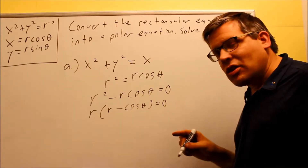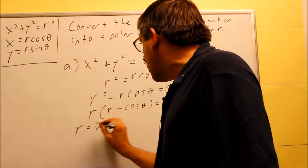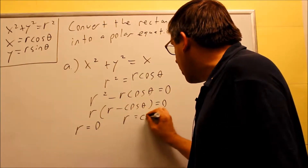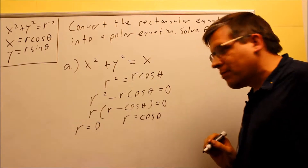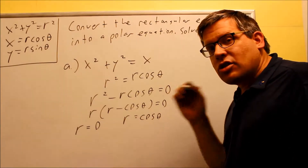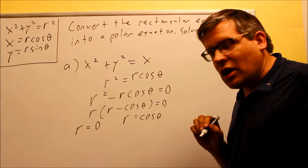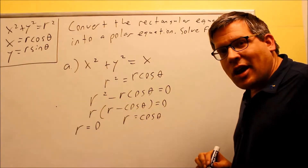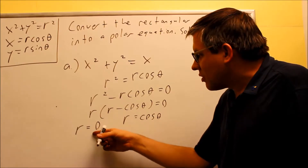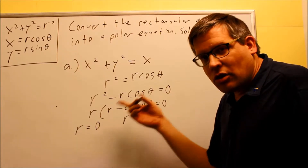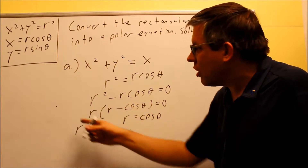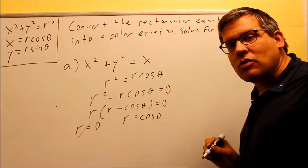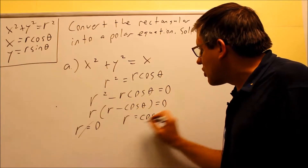Setting the first factor equal to zero gives r equals zero, and setting the second gives r equals cosine theta. However, we're going to ignore r equals zero. Even though it is technically an answer, r equals zero just represents a circle with radius zero — basically a dot. So we don't count that answer and only use r equals cosine theta.